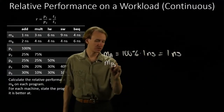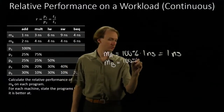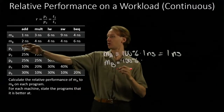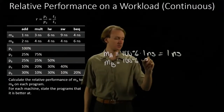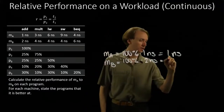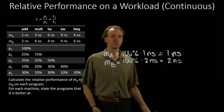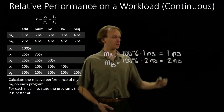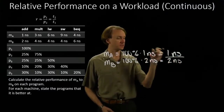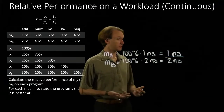For machine B, again, 100% of the instructions are add instructions, but this time they all take two nanoseconds. The average execution time per instruction is two nanoseconds. So machine B is half as fast as machine A, or machine A is twice as fast as machine B.